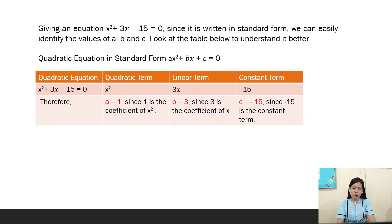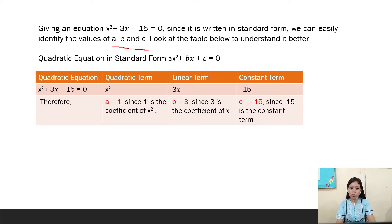Given the equation x² + 3x - 13 = 0, since it is written in standard form, we can easily identify the values of a, b, and c. Look at the table below to understand it better.